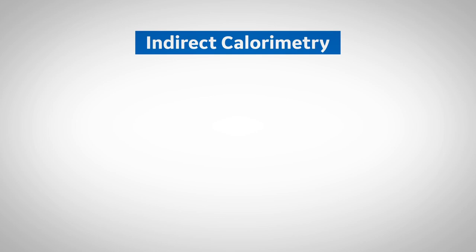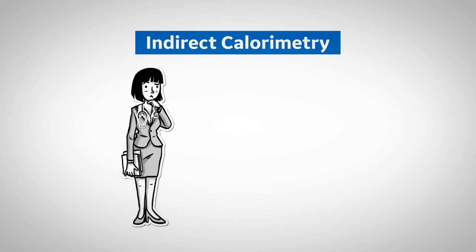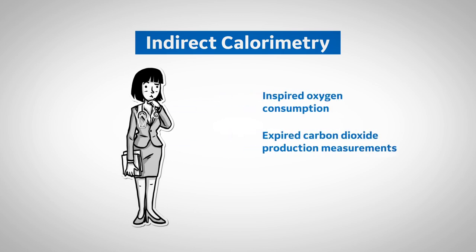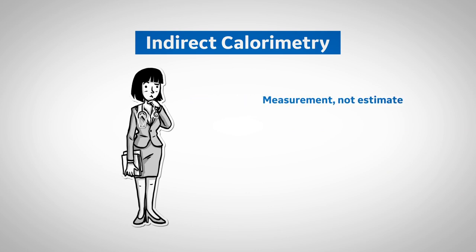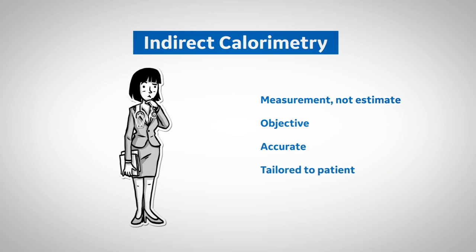Let's look at indirect calorimetry. First of all, what is it? Indirect calorimetry uses inspired oxygen consumption and expired carbon dioxide production to accurately calculate energy expenditure. The coolest thing about indirect calorimetry is it's a measurement, not an estimate. It's also objective and accurate because it's tailored to each patient.